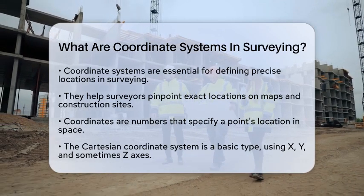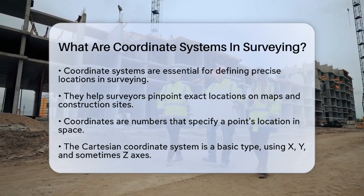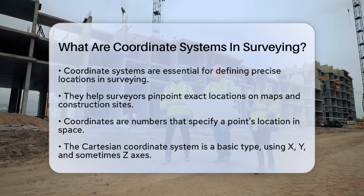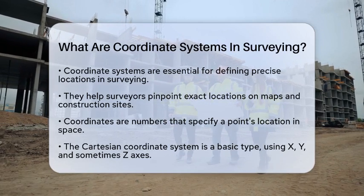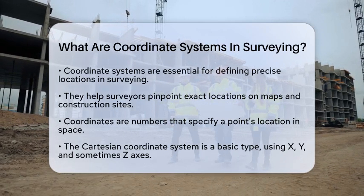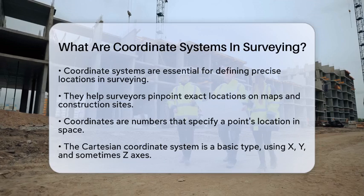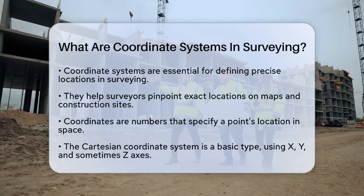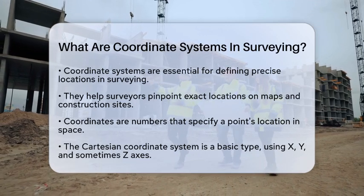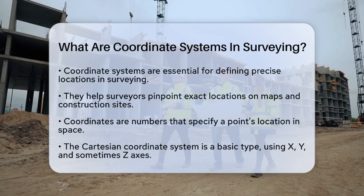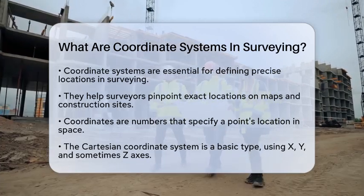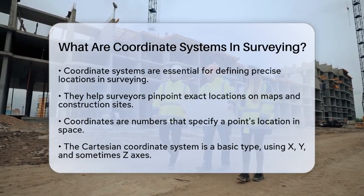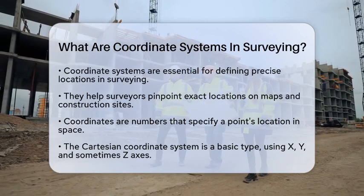At the heart of a coordinate system are numbers that specify where a point is located. In surveying, these numbers are referred to as coordinates. There are several types of coordinate systems that surveyors commonly use, each with its own method of representing location.